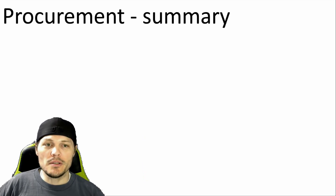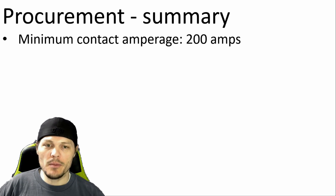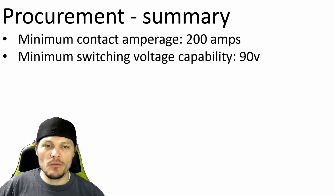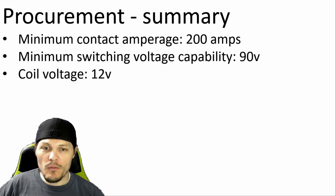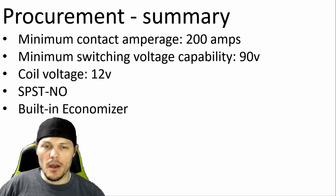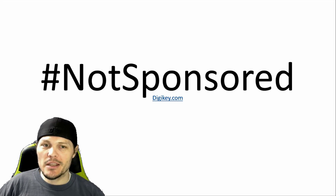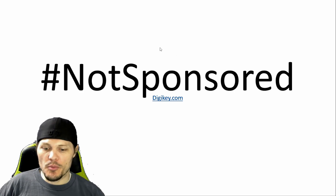So to summarize, I want my contactor to have the following characteristics: a minimum contact amperage of 200 amps, a minimum switching voltage capability of 90 volts, coil voltage of 12 volts, single pole, single throw, normally open, and a built-in economizer. DigiKey.com is a website that sells all sorts of electronics for industry and has a pretty good product filtration system. So let's head over to that website and punch in our parameters.